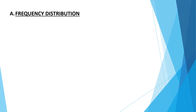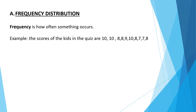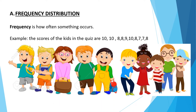Frequency distribution is how often something occurs. For example, the scores of the kids in the quiz. These kids got 10, 10, 8, 8, 9, 10, 8, 7, 7, and 8 as their scores.